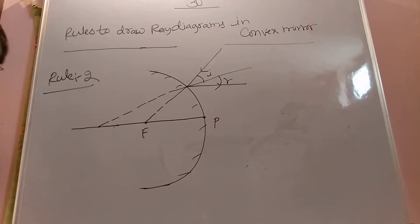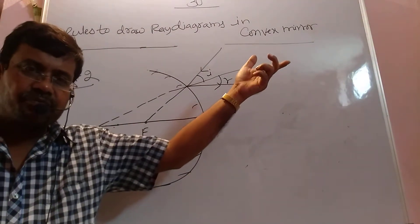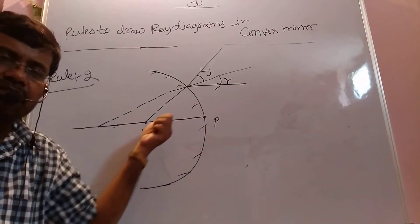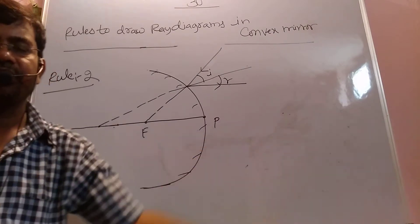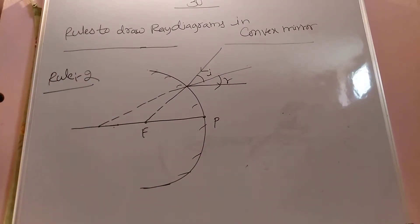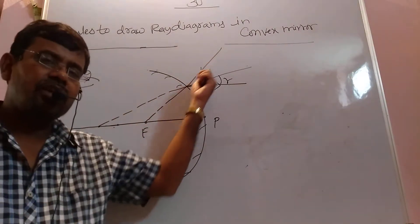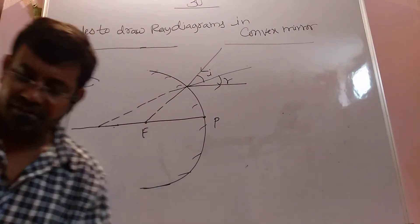So in Rule 1, if the object is at a long distance, a parallel beam of light comes in, and after reflection the reflected ray diverges from the focal point. In Rule 2, if a beam of light is moving towards the focal point, after reflection it creates a parallel beam of light.